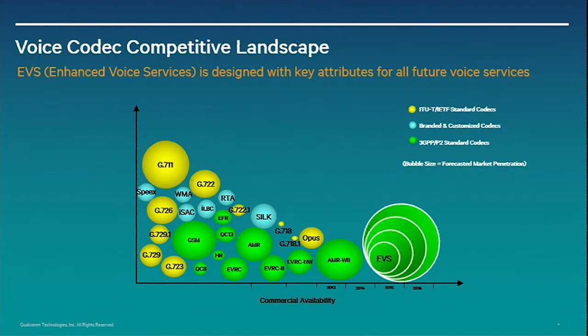Starting with GSM — GSM Enhanced Full Rate — then Qualcomm had its own QCELP-13. There was a half-rate version of the GSM codecs, then EVRC codecs on the CDMA2000 side, AMR codecs, and AMR Wideband coming up more recently. Again, too many. But I personally believe that EVS — the Enhanced Voice Services codec — has the potential to consolidate this whole fragmented ecosystem of codecs.